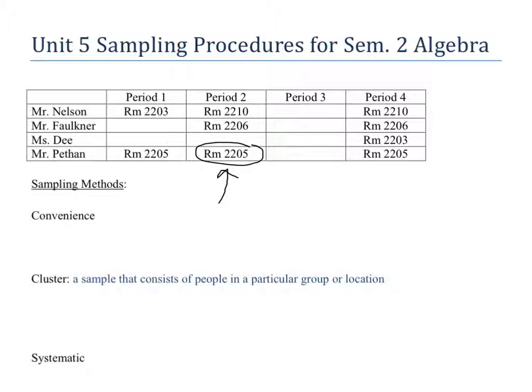You can't just walk in and say you're going to pick the people closest to the door. You have to have something that allows you to randomly pick 12 people within that room. It's a cluster because they're bound by being in that room, but you have to randomly pick 12 people to survey.